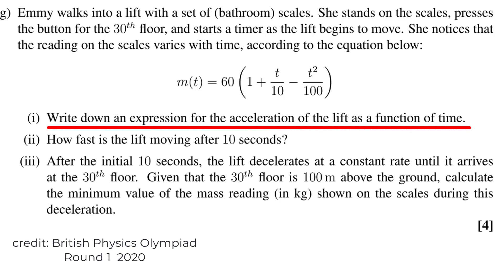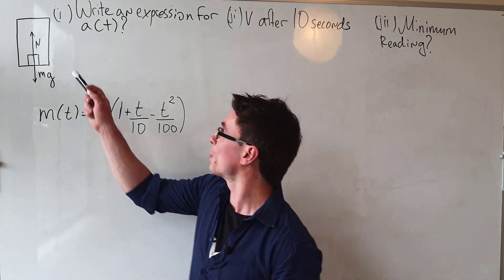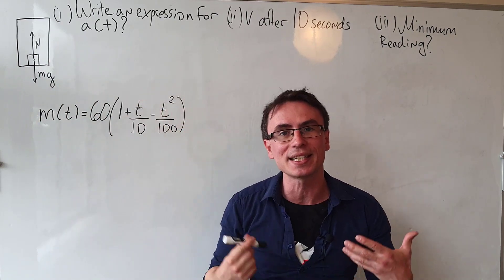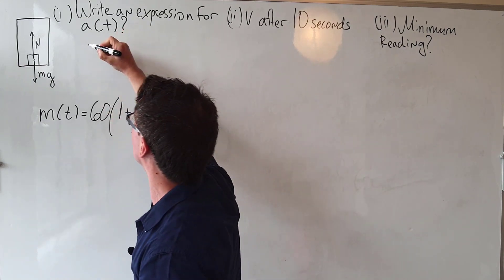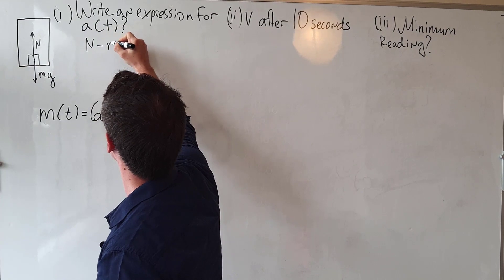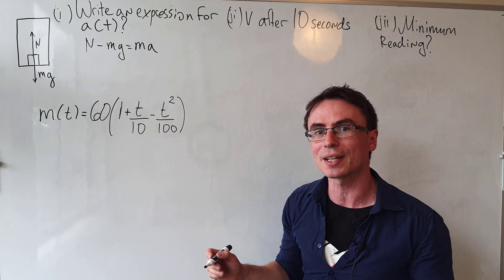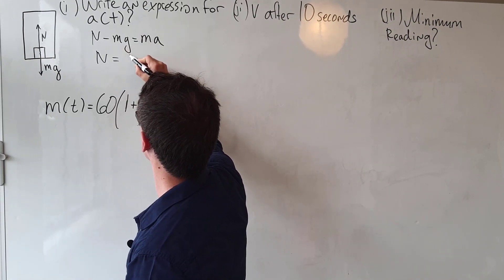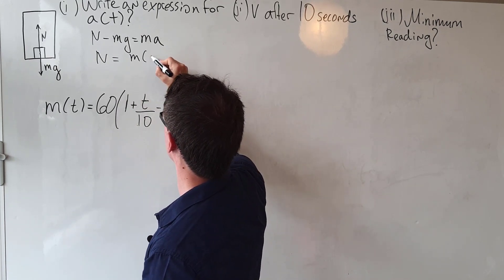Let's consider the balance of forces in the lift. We have the normal force acting upwards and the weight acting downwards. We can directly apply Newton's second law to get that N minus mg equals mass times the resultant acceleration. This means the normal reaction will be equal to ma plus mg, which we can write as m times (a plus g).